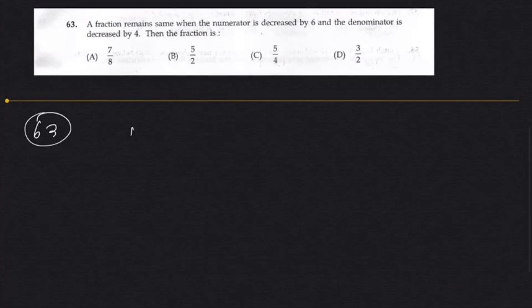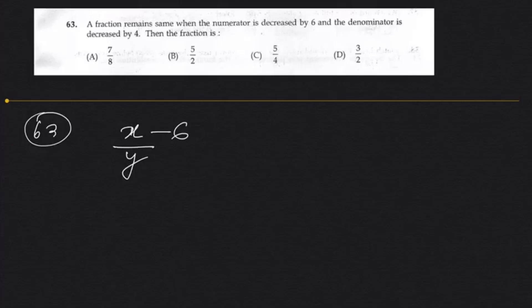Okay, Question 63. A fraction remains the same when the numerator is decreased by 6 and the denominator is increased by 6. There is insufficient information in the question to get the answer directly. Even if you let the numerator be x and the denominator be y, I don't think you will get x from one equation alone.